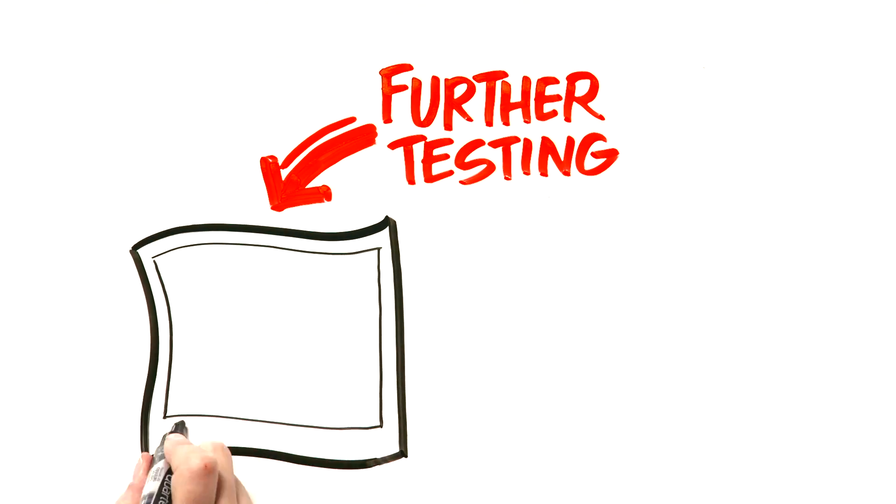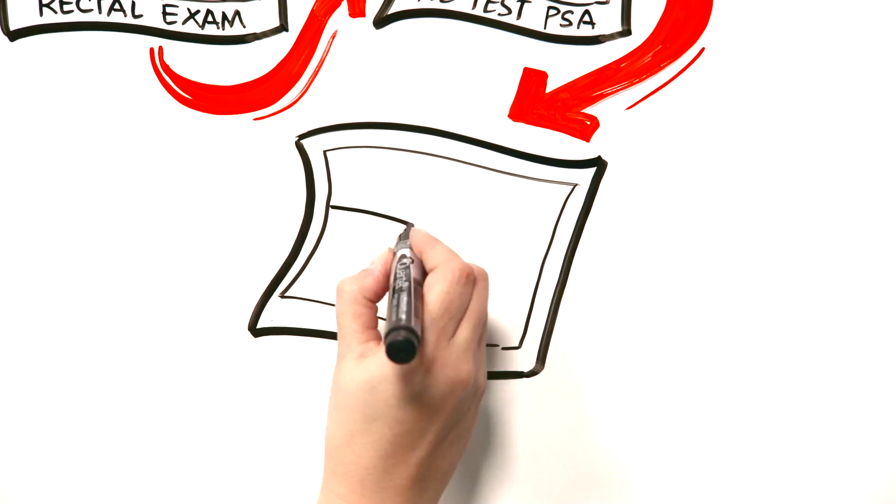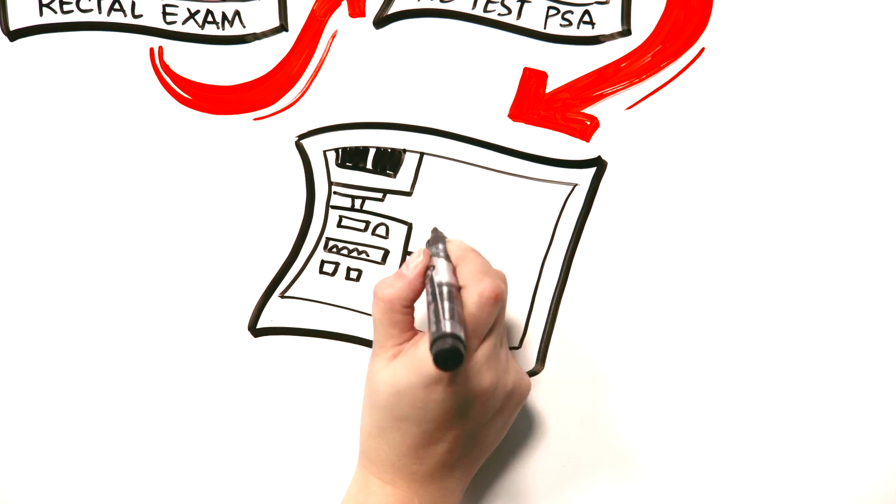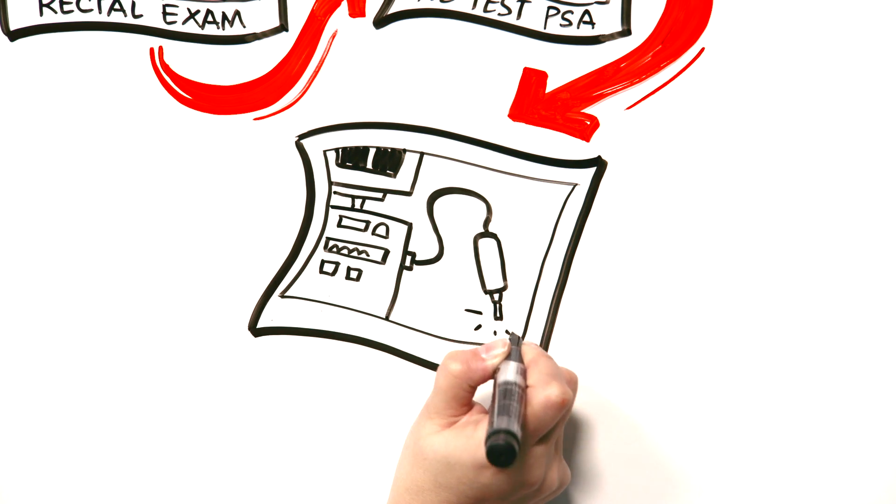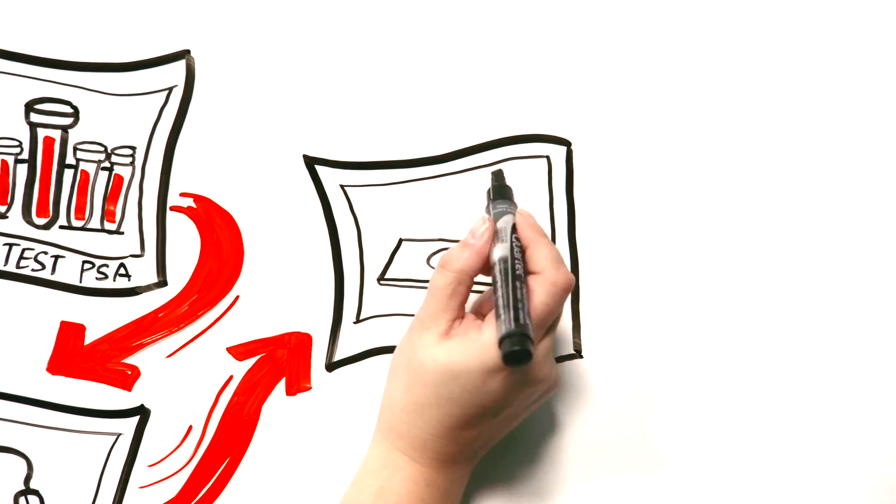By further testing, we mean that most men would have at least a rectal exam, retesting of the PSA, a transrectal ultrasound where a small probe is used to image the prostate by sending sound waves through the wall of the rectum, and finally biopsies of the prostate to check for cancer.